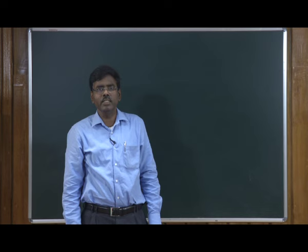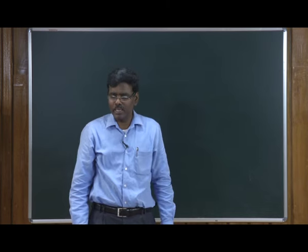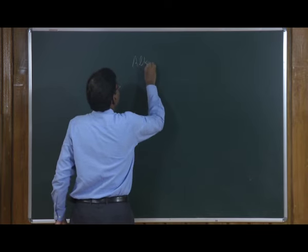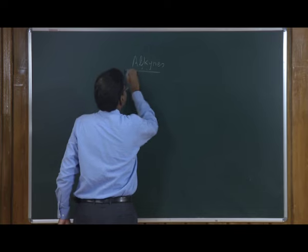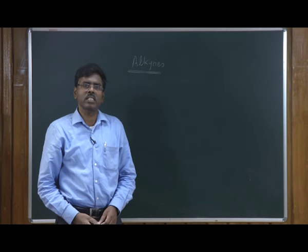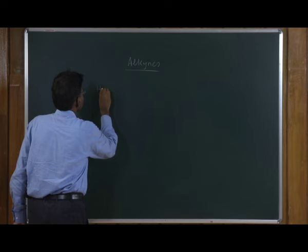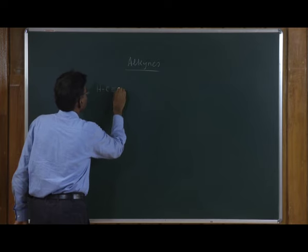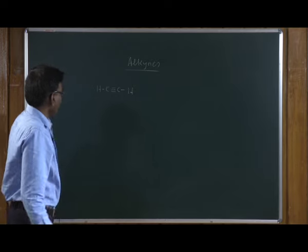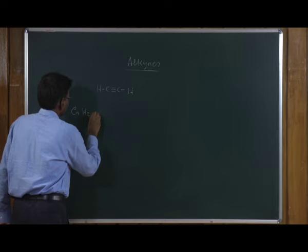Myself Punya Murthy from IIT Gauhati. I welcome you to IIT Paul program. In this class we will study about alkynes. Alkynes are hydrocarbons that contain at least one carbon-carbon triple bond. For example, ethyne, and they have the general formula CnH2n-2.